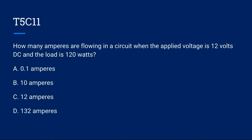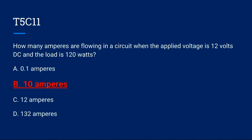T5C11: How many amperes are flowing in a circuit when the applied voltage is 12 volts DC and the load is 120 watts? A. 0.1 amperes, B. 10 amperes, C. 12 amperes, or D. 132 amperes. Correct answer is B. 10 amperes.